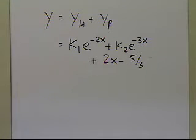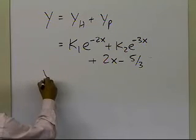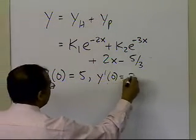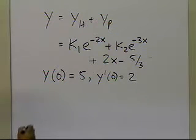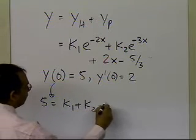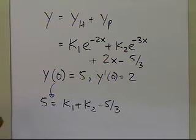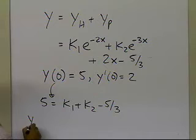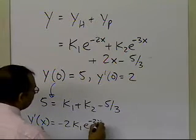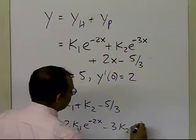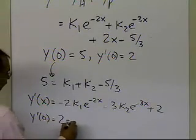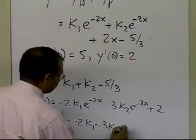To find k1 and k2, I apply the initial conditions y of 0 equal to 5 and y prime of 0 equal to 2. Applying y of 0 equal to 5 gives: 5 equals k1 plus k2 minus 5 thirds. To apply y prime of 0 equal to 2, I first find y prime of x: minus 2k1 e to the power minus 2x, minus 3k2 e to the power minus 3x, plus 2. So y prime of 0 equals minus 2k1 minus 3k2 plus 2 equals 2.